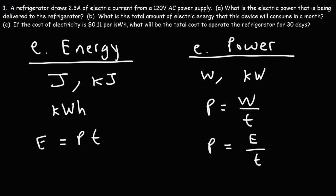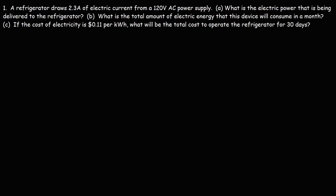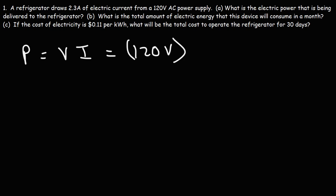Energy is power multiplied by time. Power is the rate at which energy is transferred. To calculate electric energy, it's power multiplied by time. For part A we want to calculate electric power. Here's the formula: voltage multiplied by current. This refrigerator is receiving 120 volts and drawing 2.3 amps of current, so 120 times 2.3 is 276 watts.